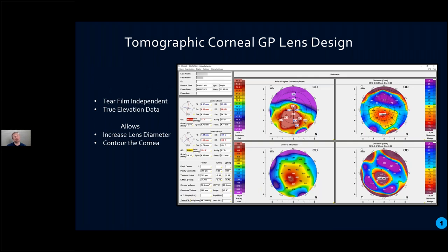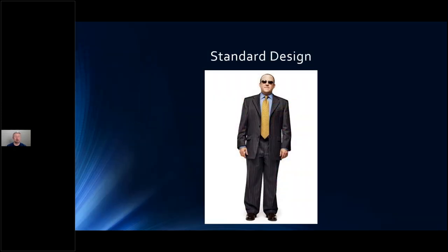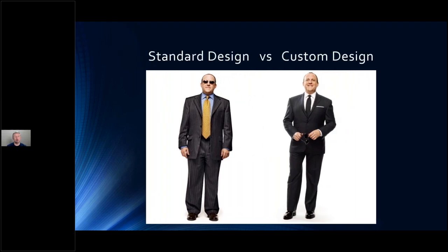So what about topographic, or even better yet, tomographic corneal designs? Now we have tear film independence if we're doing tomographic. From the Pentacam, we're getting true elevation data rather than the Placido disc, which is just giving us reflections off the precorneal tear film. This allows us to design a larger diameter lens — to go almost full HVID — and allows us to contour the cornea far more precisely. Think of it as an analogy: standard corneal GP design is like an off-the-rack suit — not a very good fit, doesn't work very well. Versus a bespoke designed suit — that's the level of sophistication we can get with something like the Pentacam.